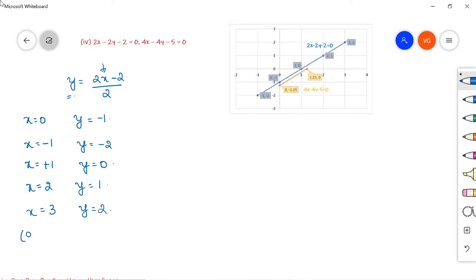So the set of points formed are: (0, -1), (-1, -2), (1, 0), (2, 1), and (3, 2).